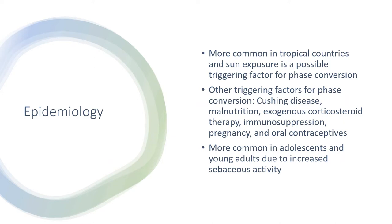There are other associated triggering factors too. Cushing's disease is thought to be a triggering factor for the phase conversion. Malnutrition, corticosteroid therapy, immunosuppression, pregnancy, and oral contraceptives can all contribute to phase conversion. The disease is more common in adolescents and young adults because they have increased sebaceous gland activity, and the fungus is lipophilic.